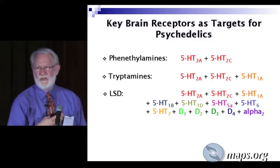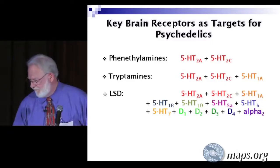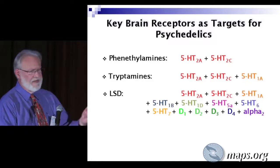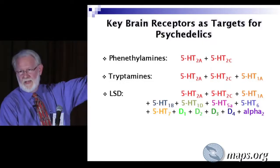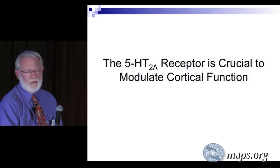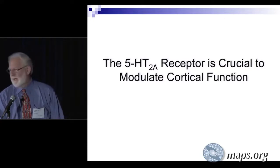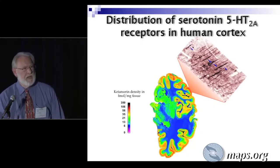With the phenethylamines and tryptamines, the 2A and 2C receptors are what they have in common. The tryptamines and LSD also activate the serotonin 1A receptor. The consensus is that activation of the serotonin 2A receptor is the essential component — necessary but perhaps not sufficient for the full range of effects. With all the other actions LSD has at brain receptors, these are all high-affinity interactions. The serotonin 2A receptor is a very critical target — it's one of the key targets for atypical antipsychotic drugs like Risperdal and olanzapine used to treat schizophrenia.